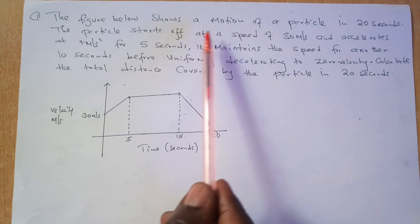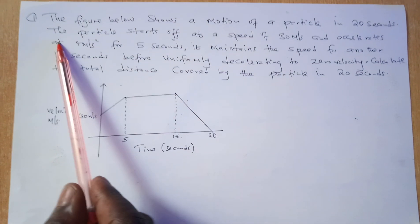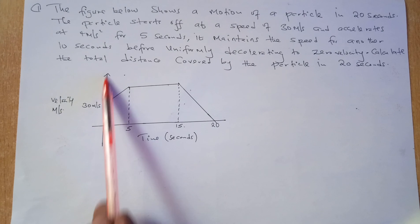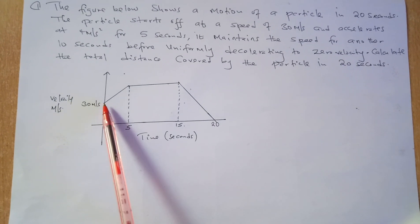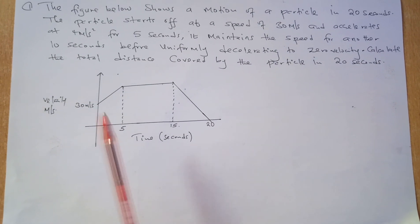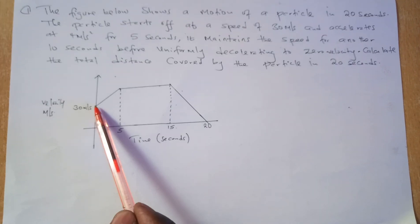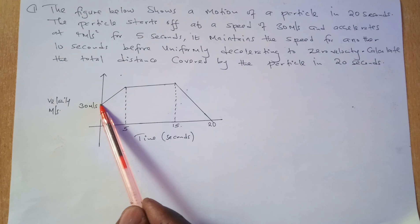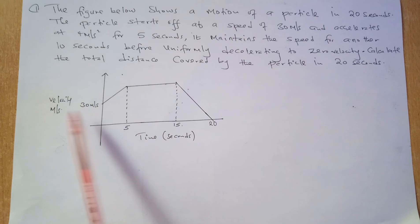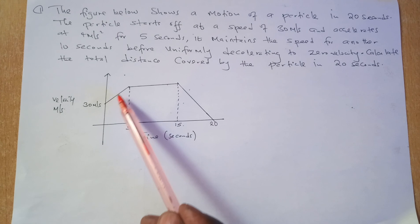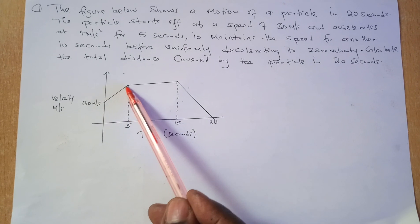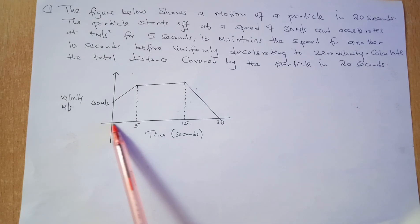The figure below shows the motion of a particle in 20 seconds. The particle starts at a speed of 30 meters per second — it didn't start from zero. It started at a velocity of 30 meters per second and accelerates at 4 meters per second squared. A positive gradient represents acceleration, so it accelerates at 4 meters per second squared for 5 seconds.